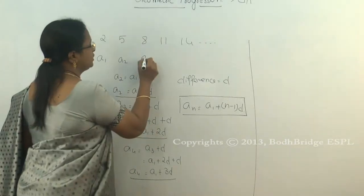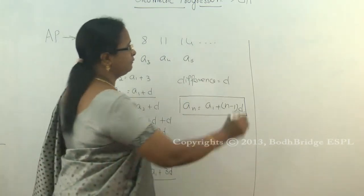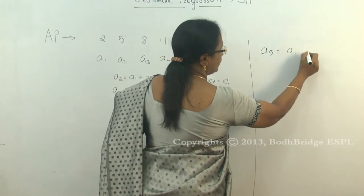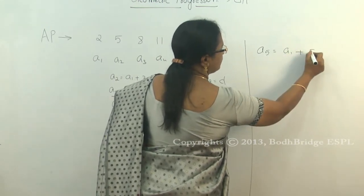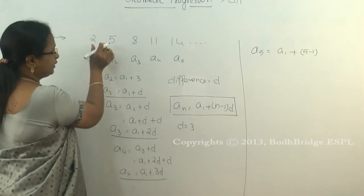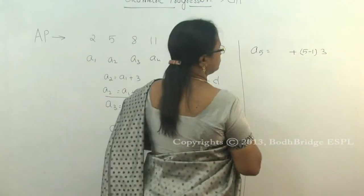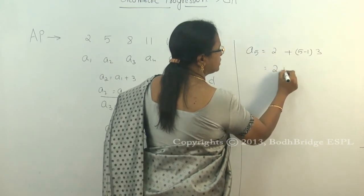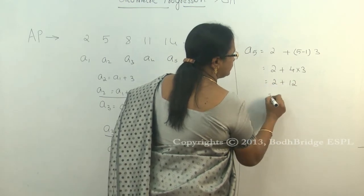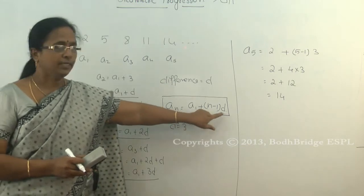Using this formula, let us find a₅. As per the formula, a₅ = a₁ + (n − 1)d, where n = 5, d = 3, and a₁ = 2. So a₅ = 2 + (5 − 1) × 3 = 2 + 4 × 3 = 2 + 12 = 14. This confirms that a₅ = 14. The nth term formula is aₙ = a₁ + (n − 1)d.